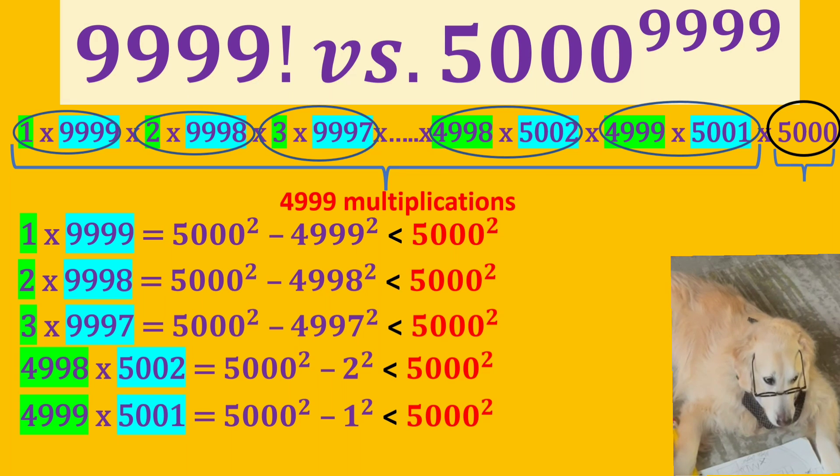Now, we see that the result of each multiplication is smaller than 5000 squared.